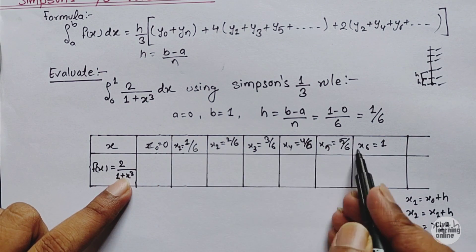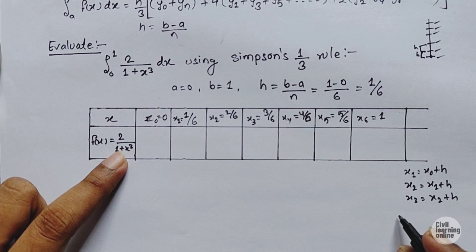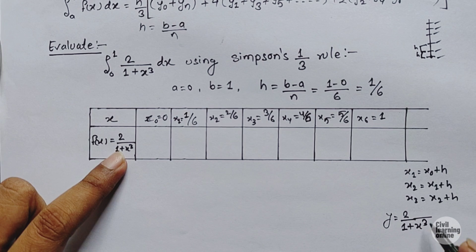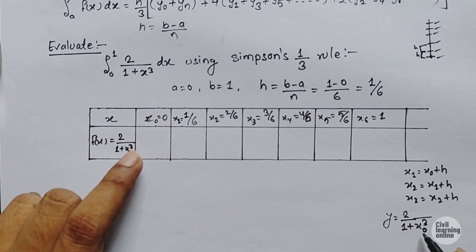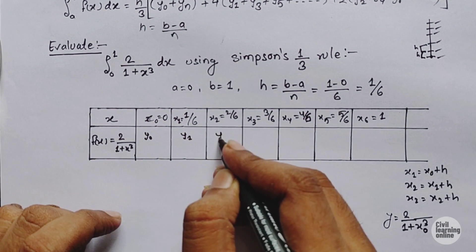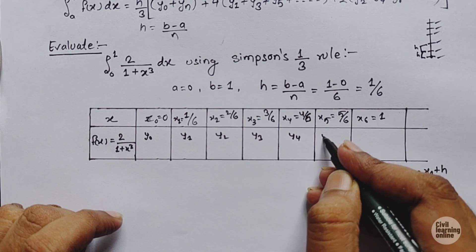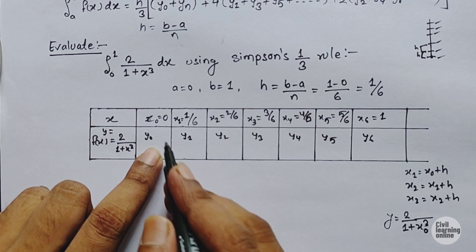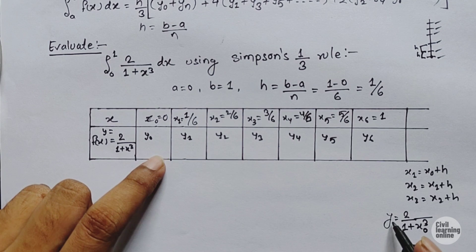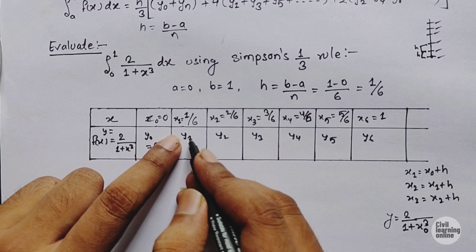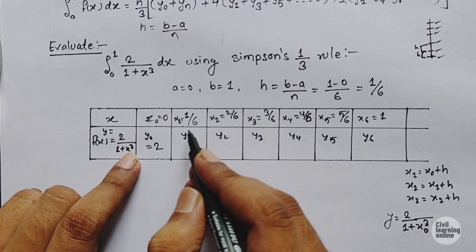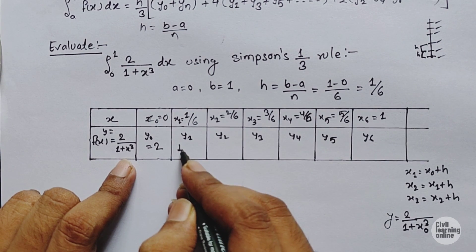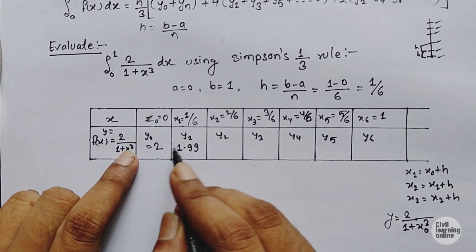Now we put each x value into the equation. y equals f(x) equals 2 divided by (1 plus x-cubed). Putting x-naught equals 0 gives y-naught equals 2. For y1, substitute x equals 1/6 into the equation and we get y1 equals 1.99.